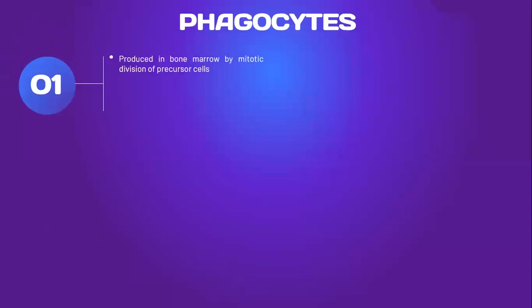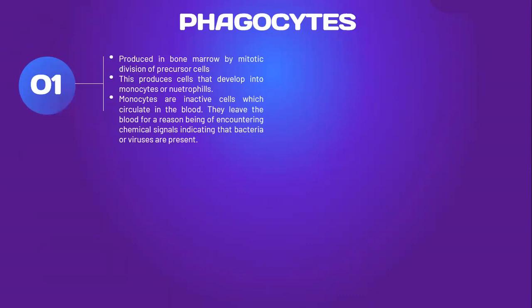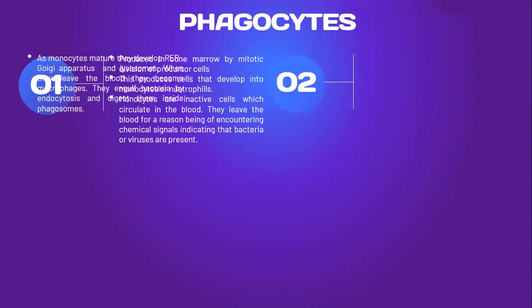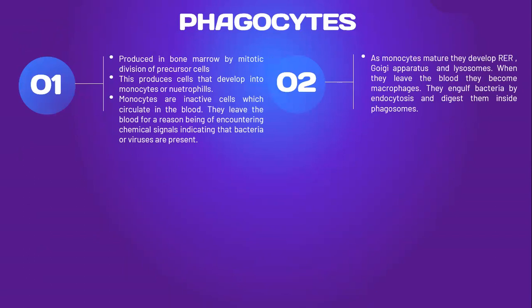Phagocytes are produced in bone marrow by mitotic division of precursor cells, and this produces cells that develop into monocytes or neutrophils. Monocytes are inactive cells which circulate in the body. They leave the blood in response to chemical signals indicating that bacteria or viruses are present. As monocytes mature, they develop rough endoplasmic reticulum, Golgi apparatus, and lysosomes. When they leave the blood, they become macrophages.